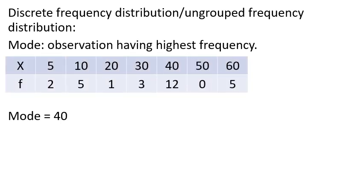For a discrete distribution, the mode is the observation with the highest frequency. If you have frequency data, you can find the highest frequency observation. That observation with the highest frequency is the mode.